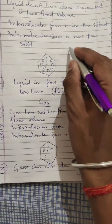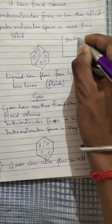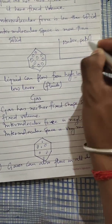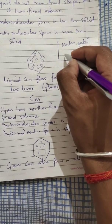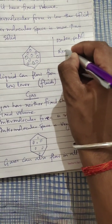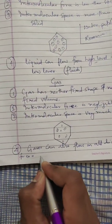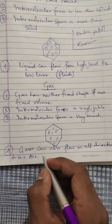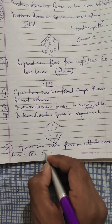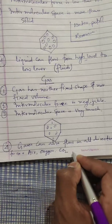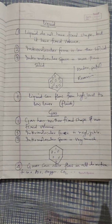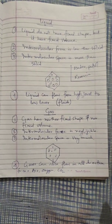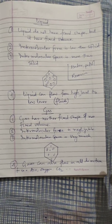Some examples of liquid are water, petrol, diesel, and kerosene. For gases, examples include air — because air is a mixture of gases — oxygen, and carbon dioxide. These are the examples of gases. Hope up to here it is quite clear to all of you. If you have any doubt, you can ask me. I will explain in the next video.